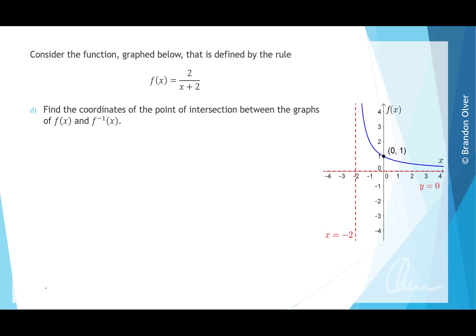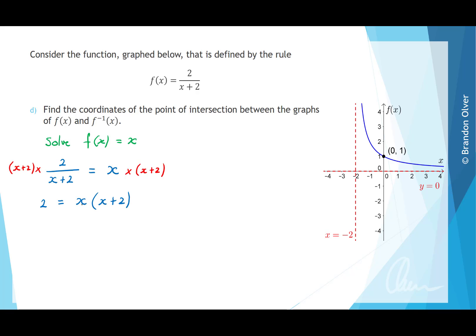For part d, we want to find the coordinates of the point of intersection between the graphs of f and f inverse. The point of intersection lies along the line y equals x, so we solve f of x equals x. That gives 2 divided by x plus 2 equals x. Multiplying both sides by x plus 2 gives 2 equals x times x plus 2. Recognizing this as a quadratic, we subtract 2 from both sides, and expanding gives x squared plus 2x minus 2 equals 0.